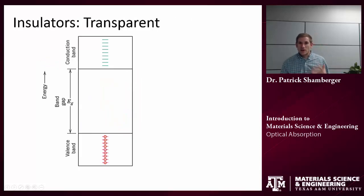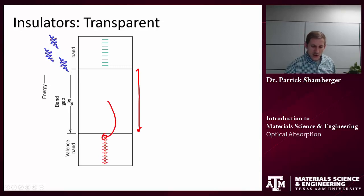Now let's think about insulators. Insulators tend to have a very wide band gap. So when that photon comes in, in most cases, that photon has some specific energy and it doesn't have enough energy to excite an electron across that band gap.